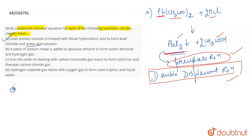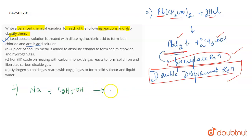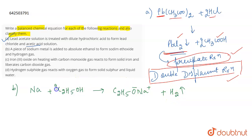Talking about the next part: a piece of sodium metal (Na) is added to absolute ethanol, C₂H₅OH. It leads to the formation of sodium ethoxide, whose formula is C₂H₅ONa (C₂H₅O⁻ Na⁺), along with the liberation of hydrogen gas. If you balance this, you get coefficients of 2 on sodium, 2 on ethanol, 2 on sodium ethoxide, and H₂ as the hydrogen gas produced. This is the balanced chemical equation.